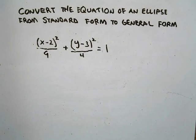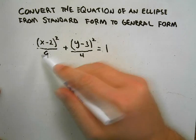Here I want to show you how to take the standard form of an ellipse and convert it into general form. Our first step is to multiply everything by the LCM—each term, all three terms, multiplied by the LCM.